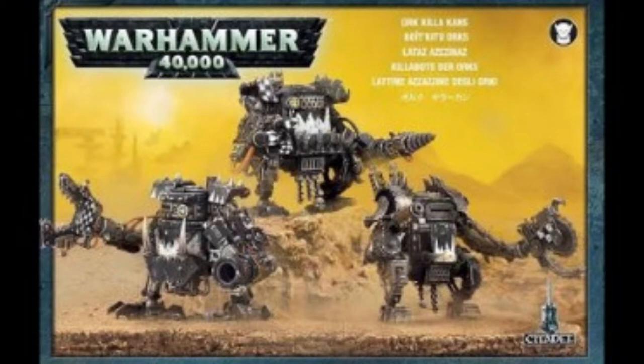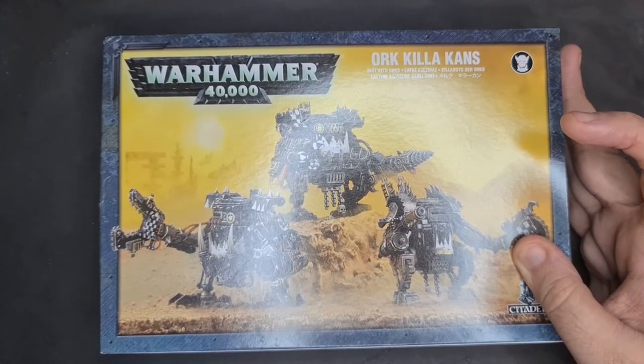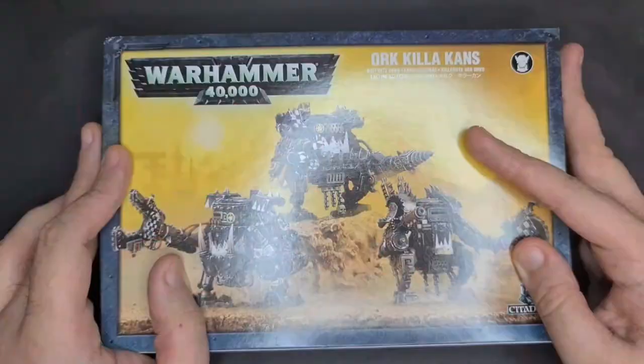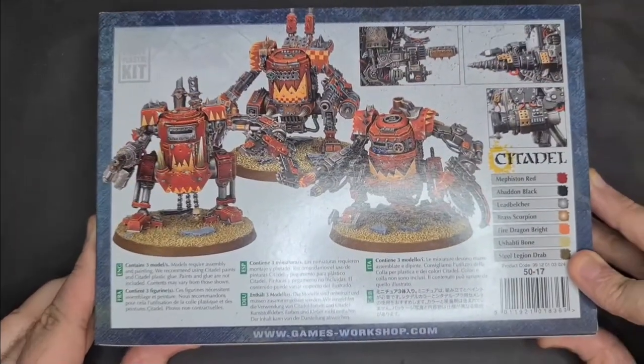This is the box here. It's got some old school style art, so this is quite old, but they never changed this for some of the Orc miniature range. The yellow background, the desert, and all that sort of jazz, and basically just the same text and logos.